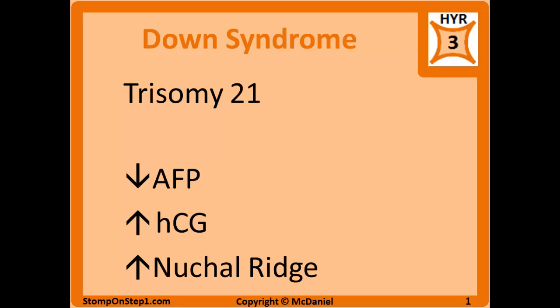You can also do an ultrasound and see increased nuchal ridge, sometimes described as nuchal translucency, in Down syndrome. Don't confuse these results with neural tube defects, which have high AFP — the opposite. Additionally, very high HCG is seen in molar pregnancies and certain cancers like seminomas, choriocarcinoma, or germ cell tumors, while low HCG is seen in ectopic pregnancies. These tests will be covered in more detail in the reproductive and pregnancy section.